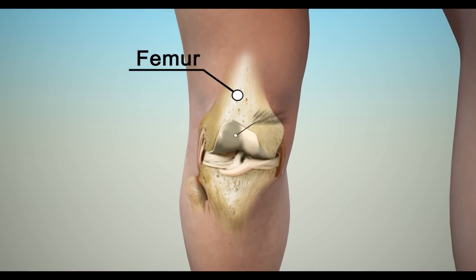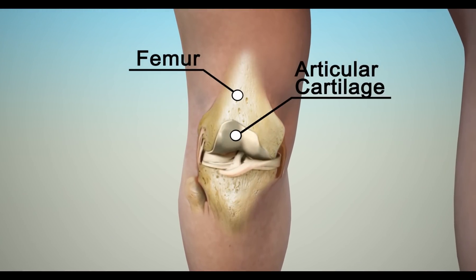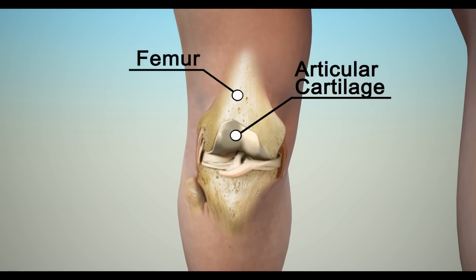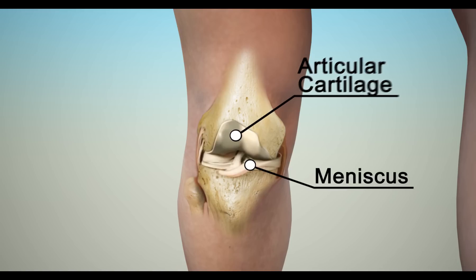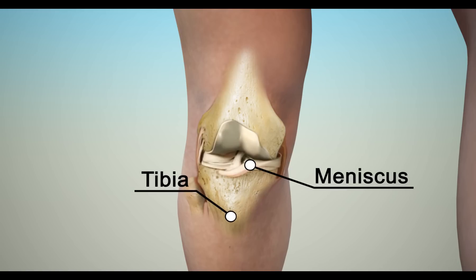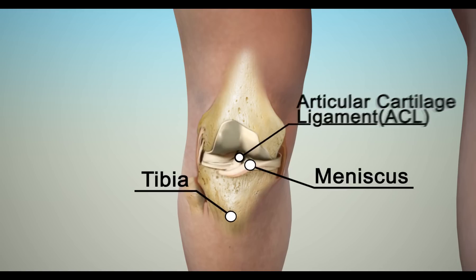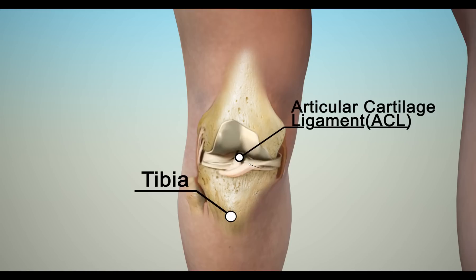Osteoarthritis, or OA, is the most common form of arthritis. This disease causes pain, stiffness, and limited movement of the affected joint.